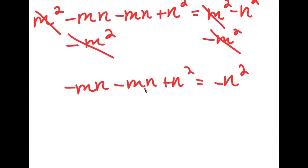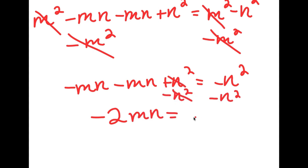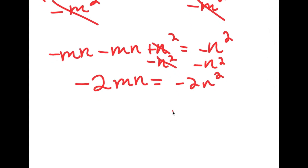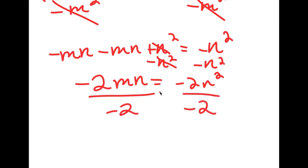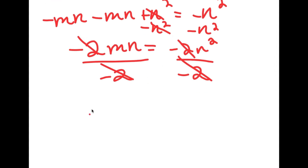Negative mn minus mn is equal to negative 2mn. And then now if I subtract n squared on both sides, these two cancel out and I get negative 2mn equals negative 2n squared. From here, I can divide both sides by negative 2. These two negative 2s cancel out, and I'm simply left with mn is equal to n squared.